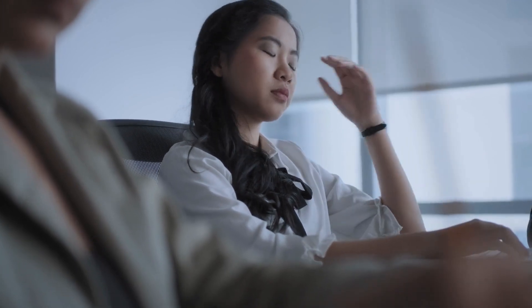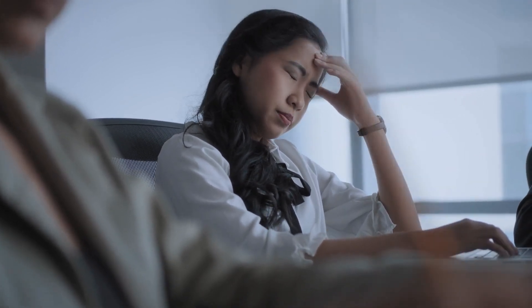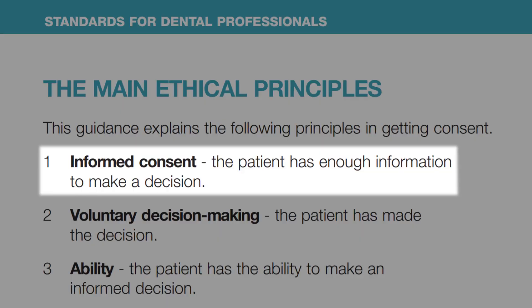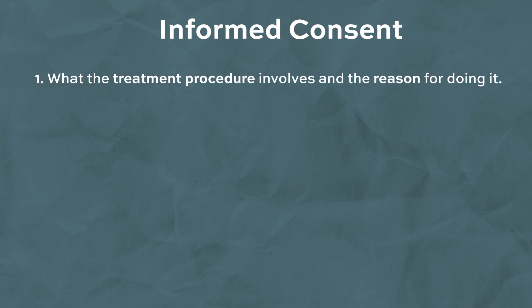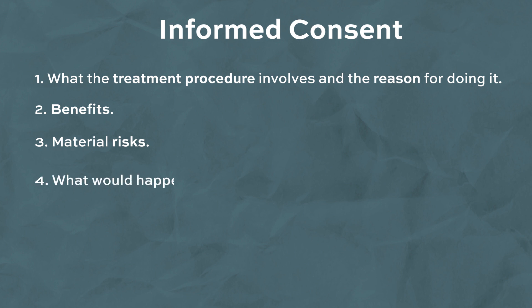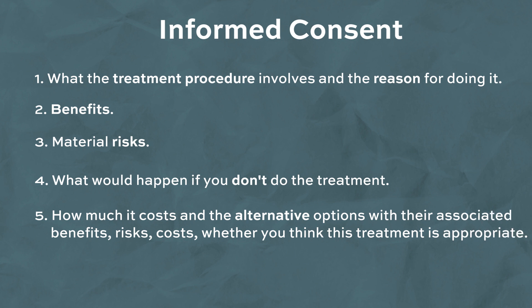Voluntary means that a dentist can't influence the patient to make a decision by pressuring them into doing what they want. Informed consent, as defined by the GDC, is achieved if a patient has received enough information to make a decision. There are six things which should be discussed: the treatment procedure and the reason for doing it; the benefits and material risks; what would happen if you don't do the treatment; how much it would cost; the alternative options with their associated benefits, risks, costs, and whether you think that treatment is appropriate; and finally, ask if they have any questions.